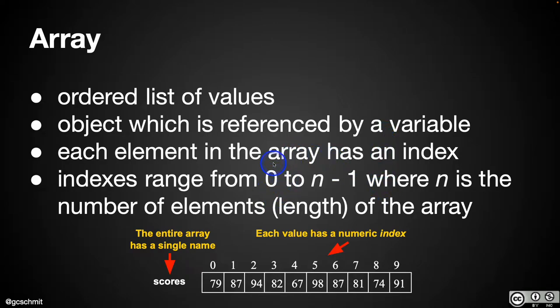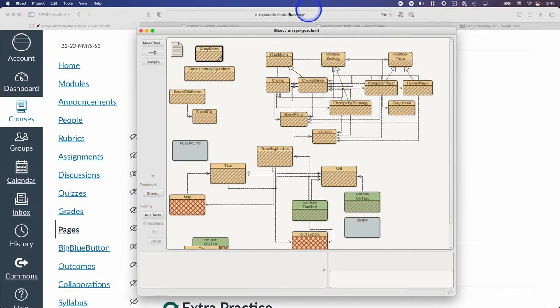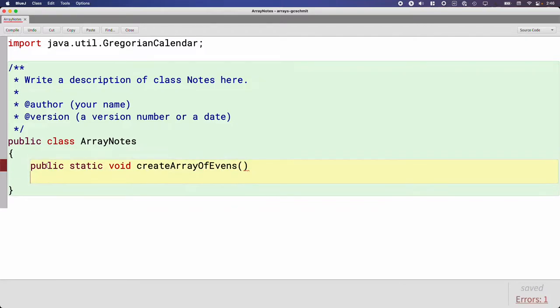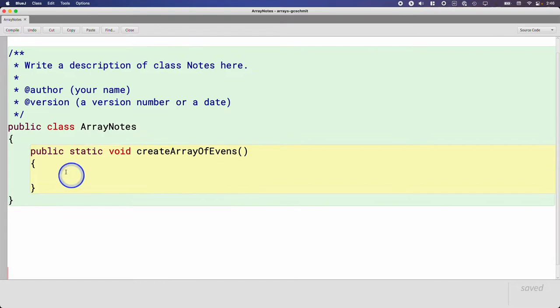Let's see what the syntax looks like to create something like this. So in your new BlueJ project, in the upper left is the ArrayNotes class. This is where we're going to create a series of static methods as we do a little bit of live coding together to explore the syntax. Let's create a public static void method called CreateArrayOfEvens.